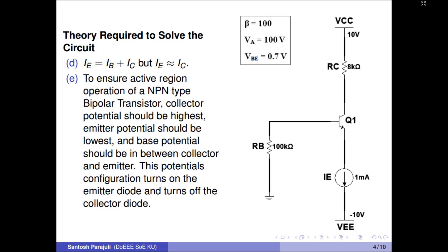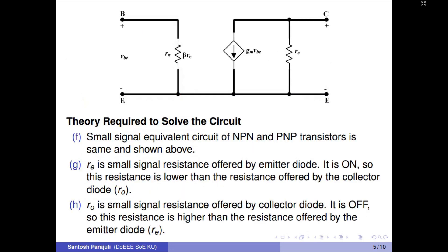Base current in a transistor is negligible. Concept E: to ensure active region of operation of a bipolar transistor, the emitter diode should be turned on and the collector diode should be turned off. Concept F: the small signal equivalent circuit for an NPN transistor is the same as that of a PNP type transistor, as shown in the circuit.